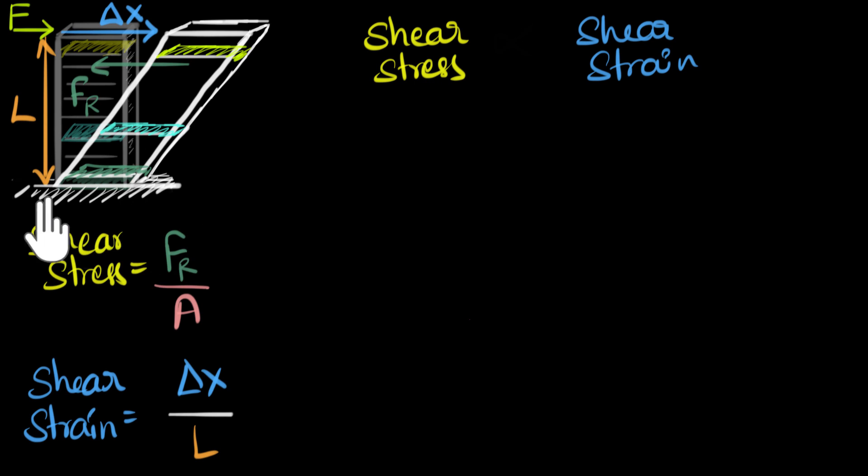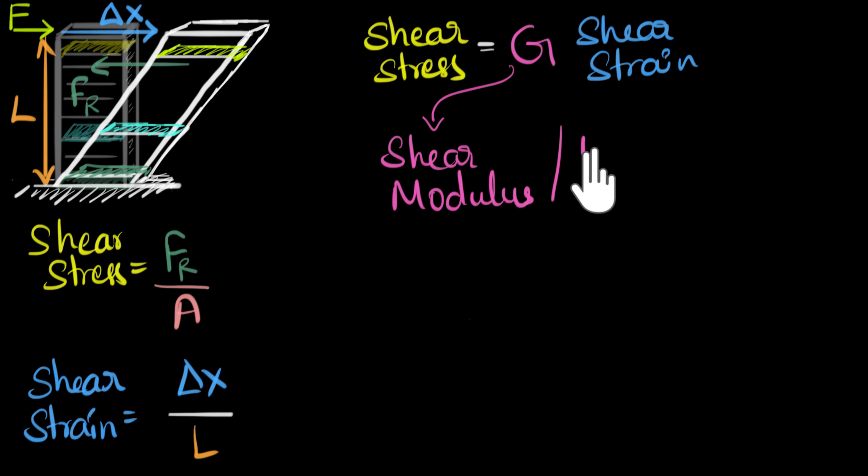The proportionality can be replaced by a constant, which we call as the modulus of elasticity. And that modulus of elasticity over here for shearing, the letter we use for that is G, and we call that as shear modulus. It's also called as rigidity modulus, and we'll learn in a little while why it's called so.